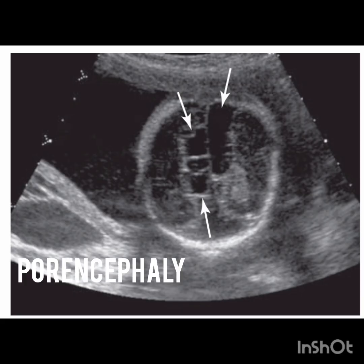First up is Porencephaly. Porencephaly is the presence of one or more cystic cavities in the brain. Similar to Hydroencephaly, Porencephaly is likely vascular in etiology. The cystic area frequently communicates with the adjacent lateral ventricles, as you can see — the cystic spaces indicated by the arrows.